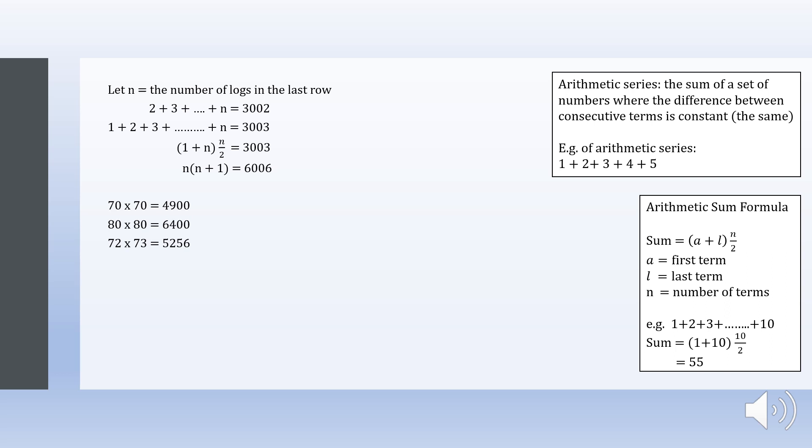So we test 77 times 78, which equals to 6006, and that means that n is 77.